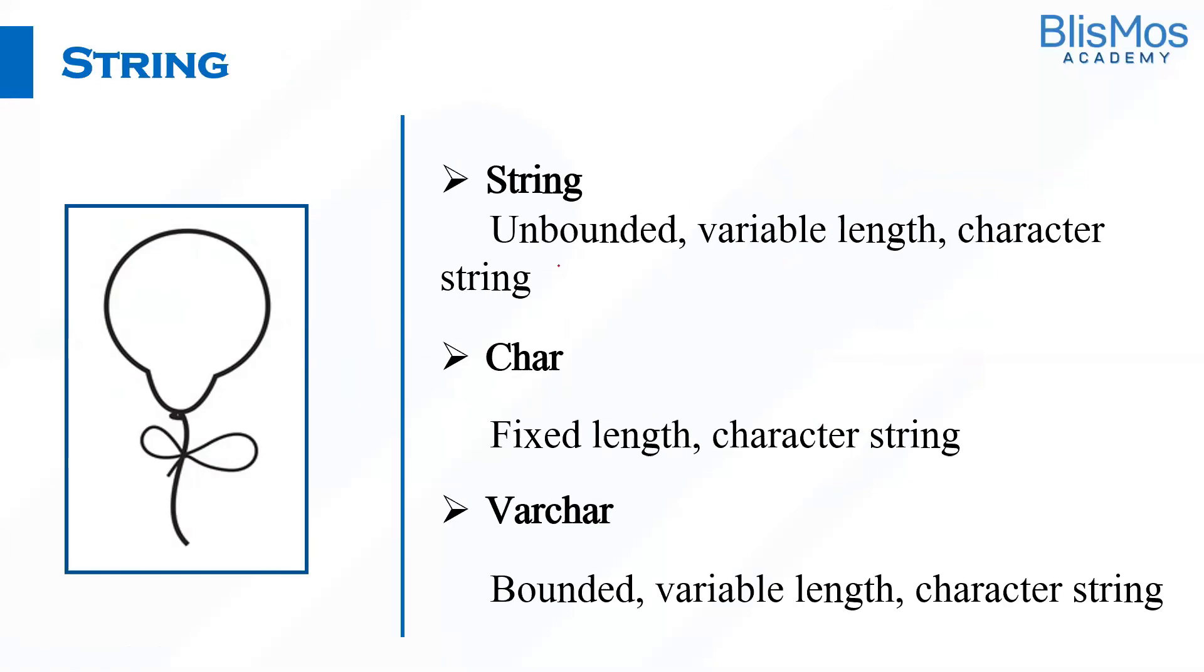In string we have three types: string, char, and varchar. If you observe, string is unbounded, whereas varchar is bounded. String is an unbounded variable-length character string. Varchar is a bounded variable-length character string. Char is a fixed-length character string. When you define a varchar, you need to provide how many characters you want - it is bounded by that.